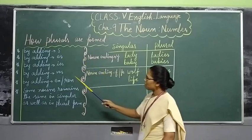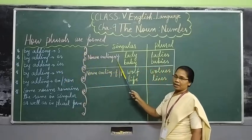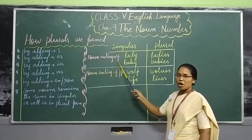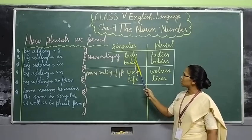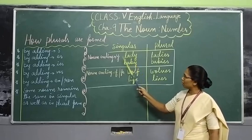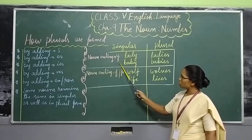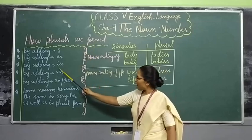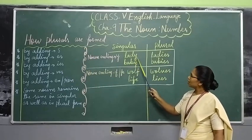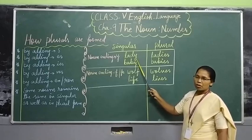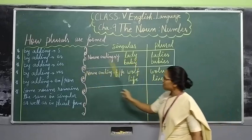Today we are going to learn about nouns that form their plural by adding -ies. These are nouns ending in -y. For example, 'lady' ends in the letter y. While forming the plural form, you erase the y and add -ies in its place.